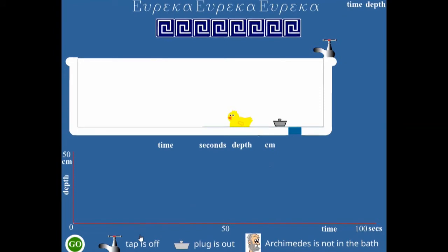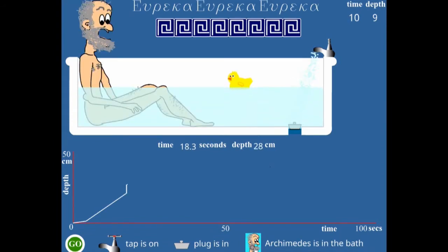Well, we're now in the bathroom. And we've got another type of distance time graph here. This time the distance is the depth of the water in this bath. This bath is Archimedes' bath. And as it fills up, Archimedes gets in.